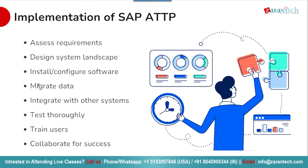A successful SAP ATTP implementation starts with understanding your specific requirements and designing the right system landscape. The next phase is installing and configuring the software, including country-specific compliance packages. You will then need to migrate your existing product and partner data, followed by integration and interface testing with your other systems. Ensure that your business processes are executed properly, train your users on the new system and processes, and collaborate closely with SAP and your implementation partners throughout the project.